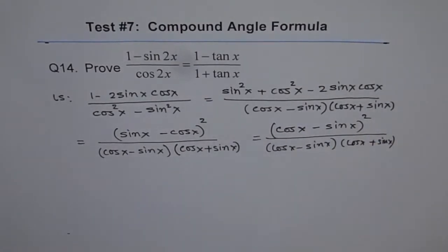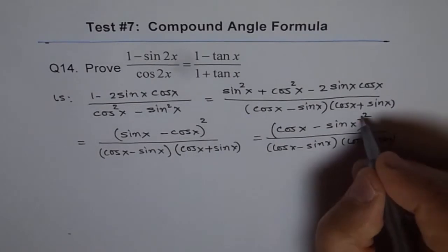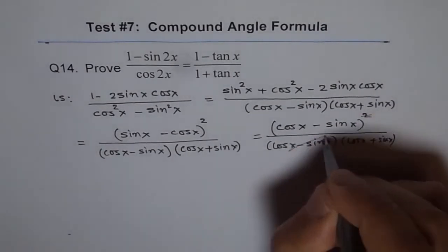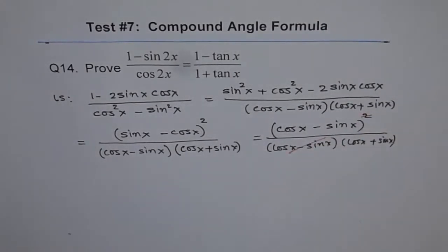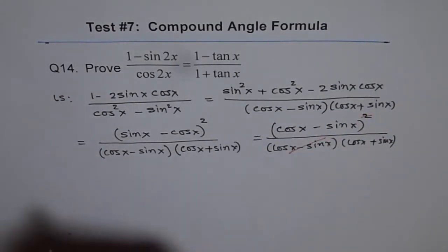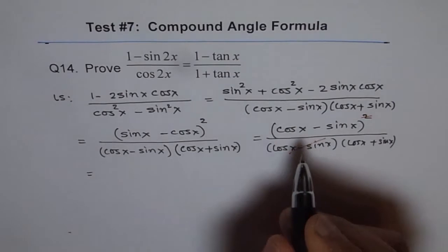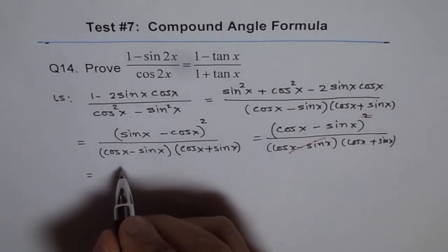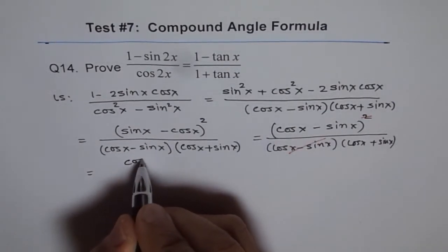We can cancel out one of the factors. So we are left with cos x minus sine x divided by cos x plus sine x.